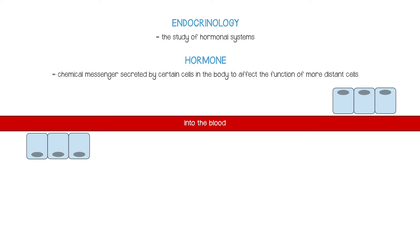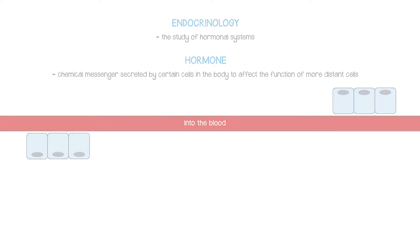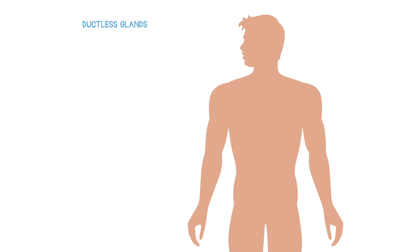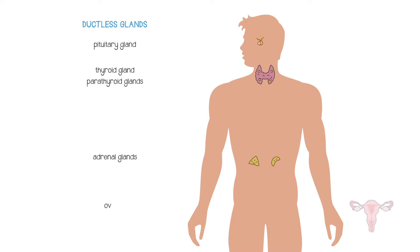Hormones are often secreted by special glands, often known as ductless glands, because they don't have tubes leading from them — as they're not secreting into the outside world, but into the bloodstream. Ductless glands include the adrenal gland, thyroid gland, parathyroid glands, pituitary gland, ovaries and testes.